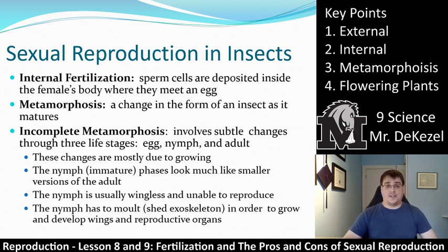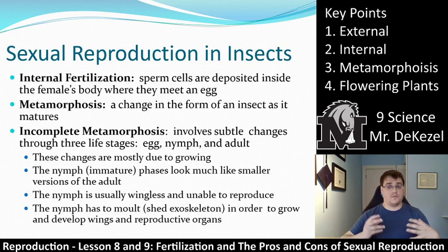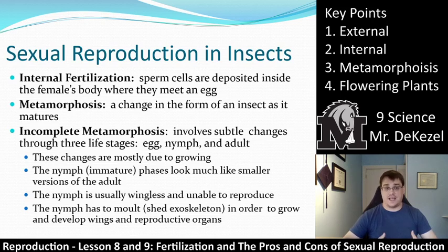The other type is internal fertilization. That is the type that humans have, and many other different animals, as well as insects. Internal fertilization is when the sperm cells are deposited inside the female's body where they meet an egg — it is not as random as outside the body. After those two gametes meet, a process called metamorphosis occurs, especially in insects, which is a change in the form of an insect as it matures and grows up. There are two different types: incomplete and complete metamorphosis.